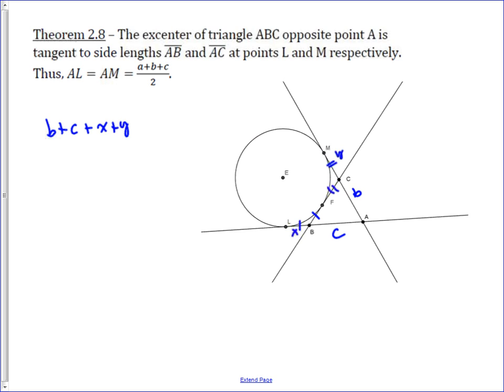But X and Y together make up the third side, which is A, so we can make that substitution, and this equals the perimeter of the triangle.